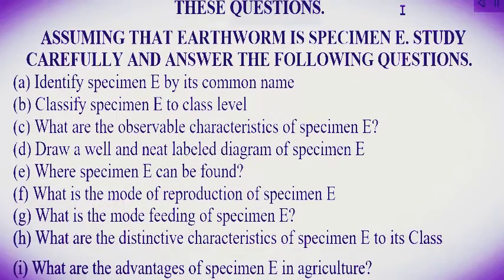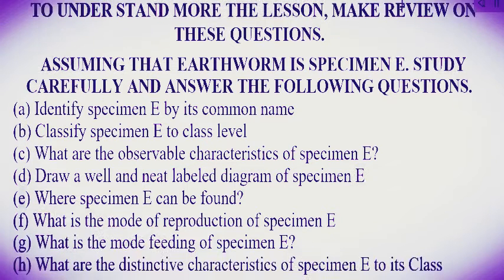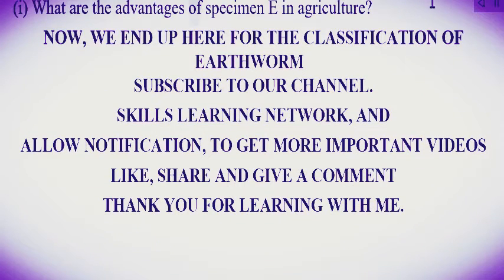Assuming that earthworm is specimen E, study carefully and answer the following questions: a) Identify specimen E by its common name. b) Classify specimen E to class level. c) What are the observable characteristics of specimen E? d) Draw a neat labeled diagram of specimen E. e) Where can specimen E be found? f) What is the mode of reproduction of specimen E? g) What is the mode of feeding of specimen E? h) What are the distinctive characteristics of specimen E to its class? i) What are the advantages of specimen E in agriculture?